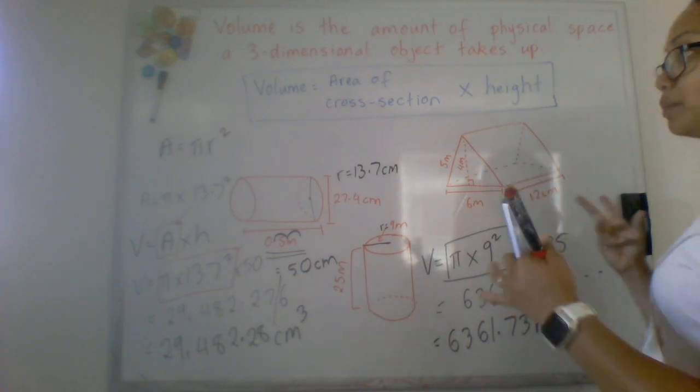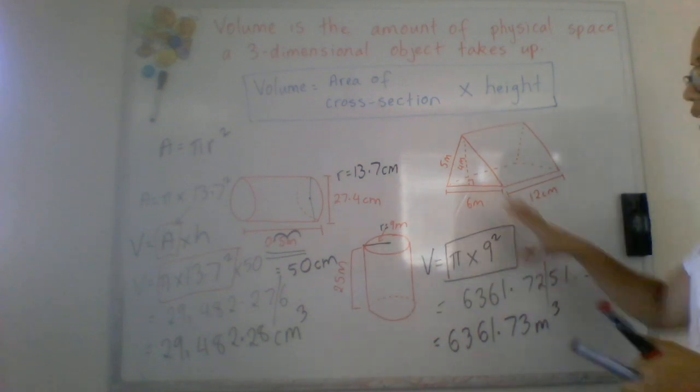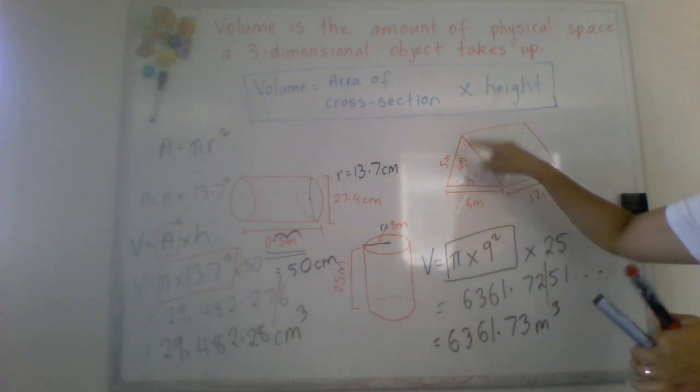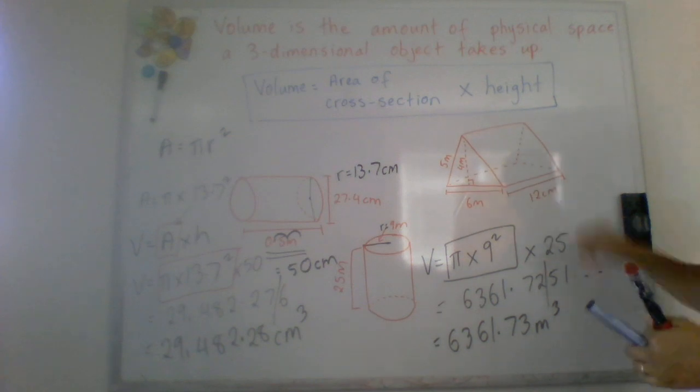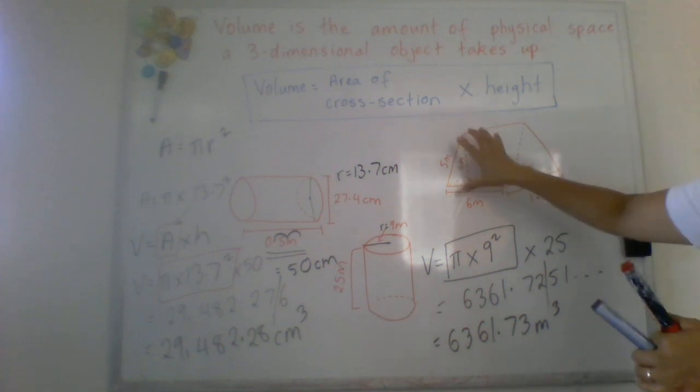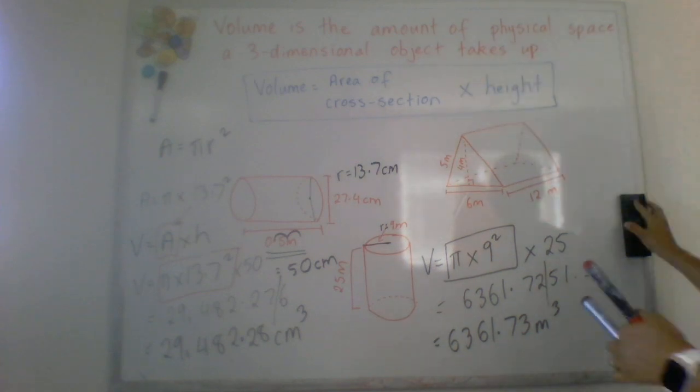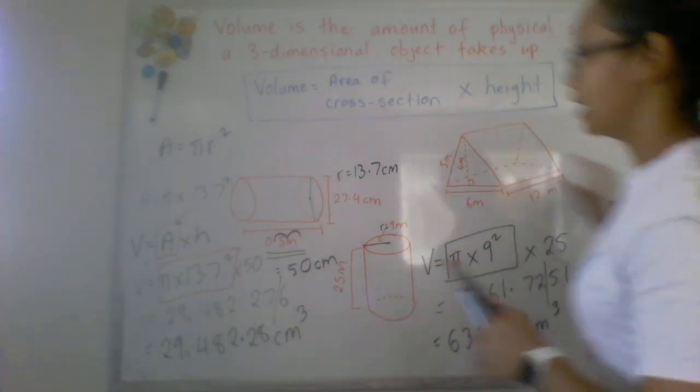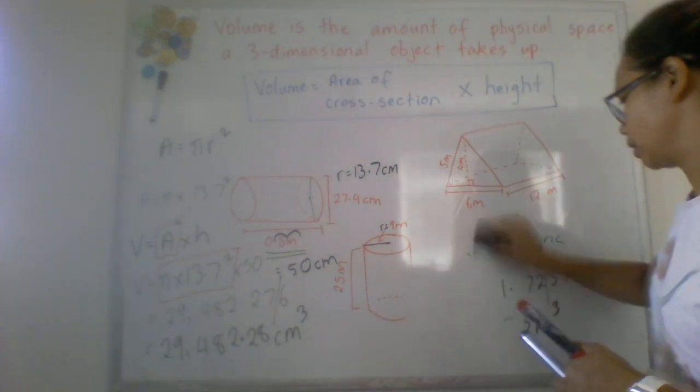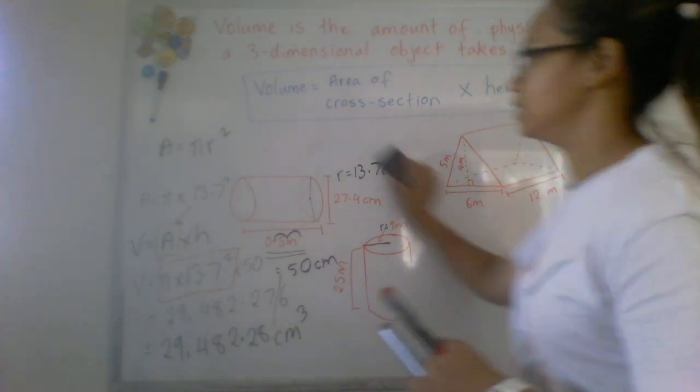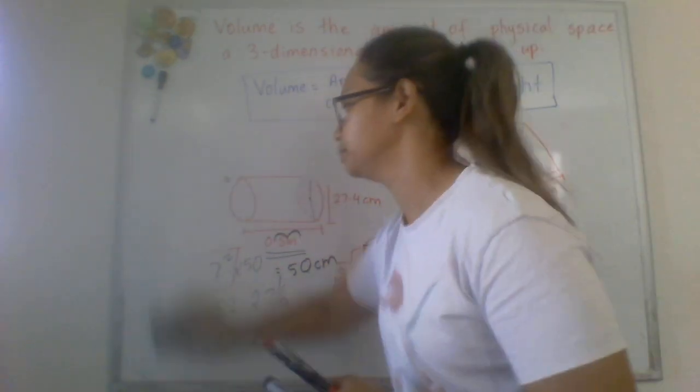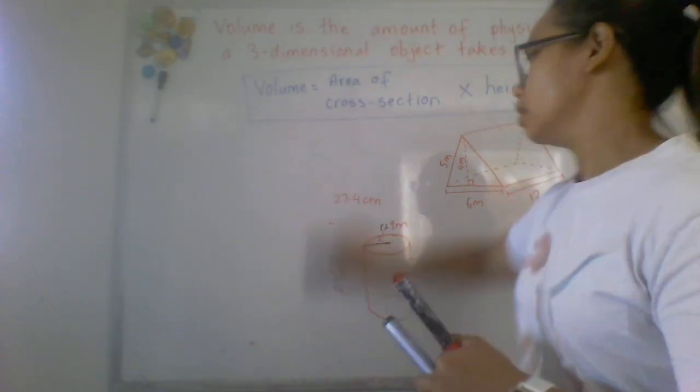That's looking at our cylinders, we're now going to be looking at our triangular prism again using the exact same concept. Just while I erase all this I want you to have a look at that and think about what is the shape I see at the cross section of my triangular prism if I were to cut that, so what do I need to replace this part with.